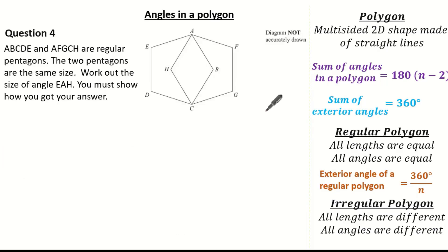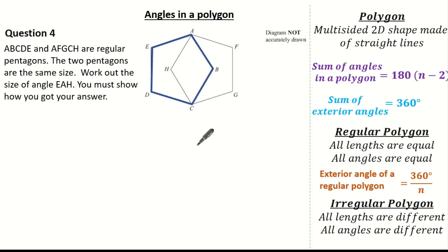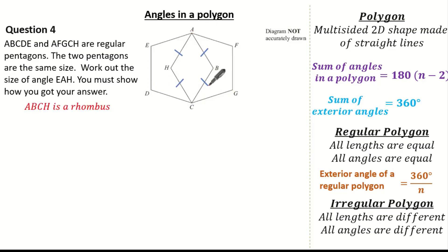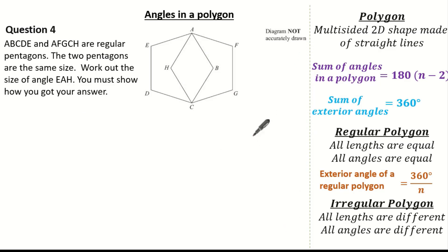Now let's have a look at our last question. A, B, C, D, E and A, F, G, C, H are two regular pentagons of the same size. We are asked to work out angle E to A to H. It's quite difficult to see the pentagons so I'll highlight them. Given that these are regular pentagons, it is fair to say that A, B, C, H is a rhombus, because we know these sides are equal in length. Identifying our rhombus is super important for what we are going to do next.